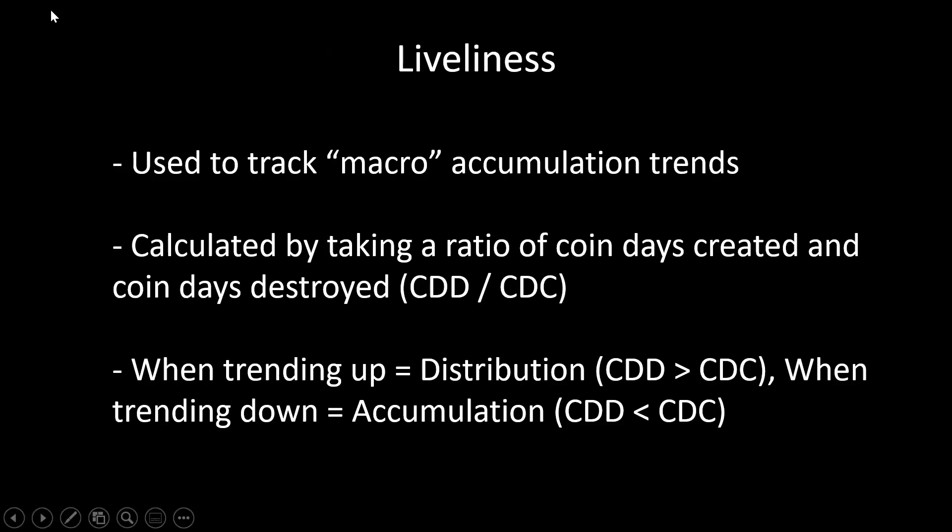The first metric we'll be talking about to apply destruction is liveliness. Liveliness is used to track broader macro accumulation trends. It's calculated by taking a ratio of coin days created and coin days destroyed — specifically coin days destroyed divided by coin days created. Whenever the metric is trending up, that indicates distribution because the amount of coin days being destroyed is outpacing coin days being created. When trending down, it means there's accumulation because more coin days are being created than destroyed.